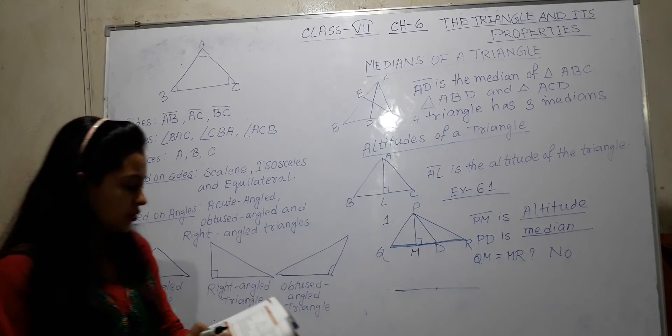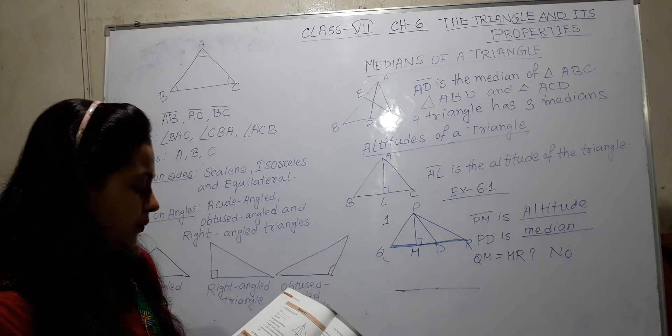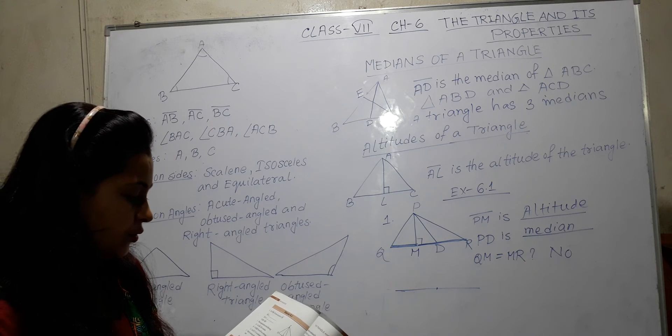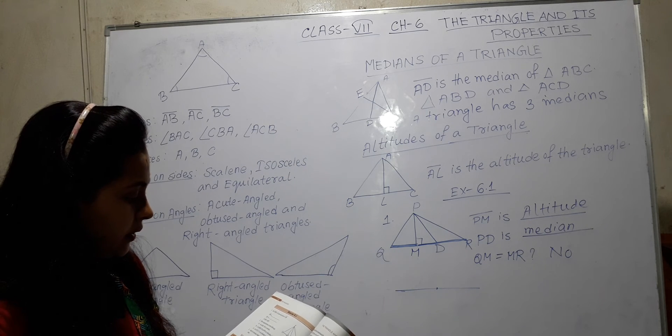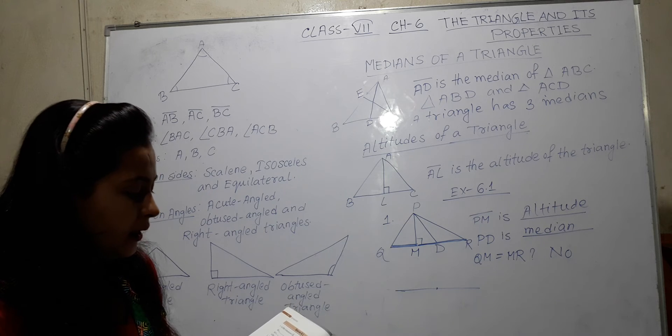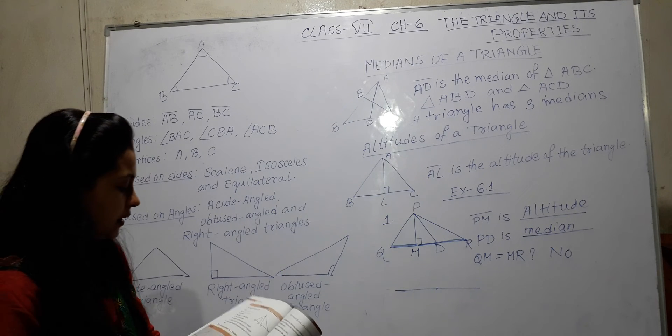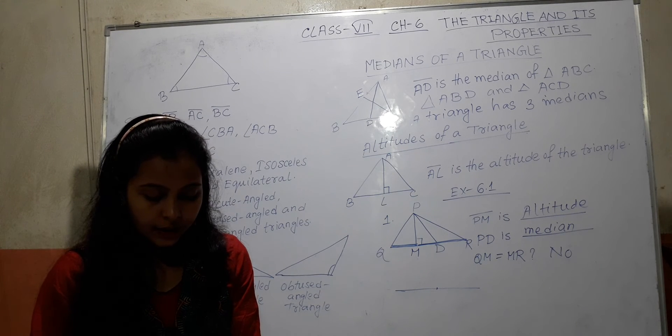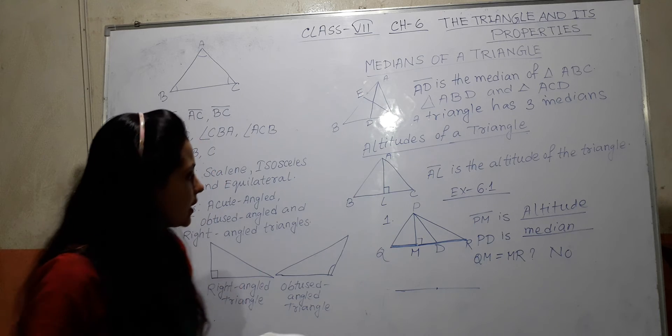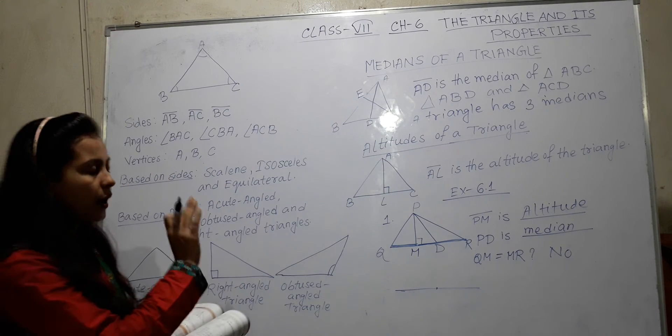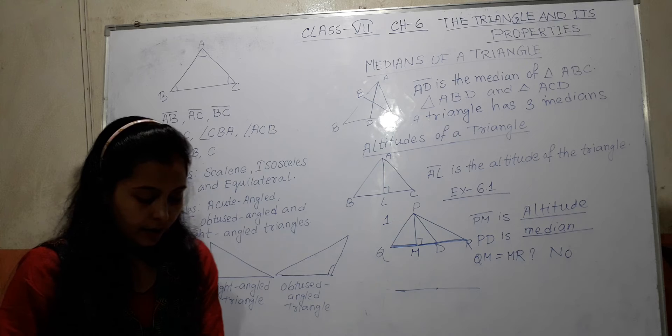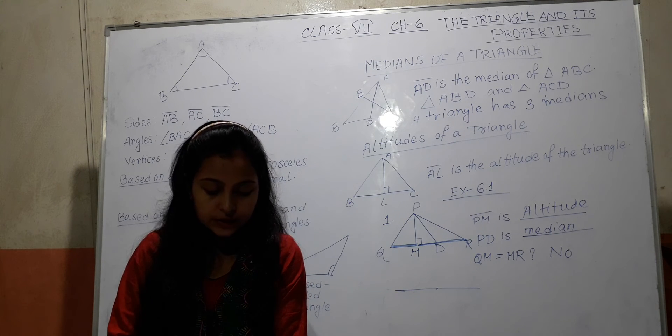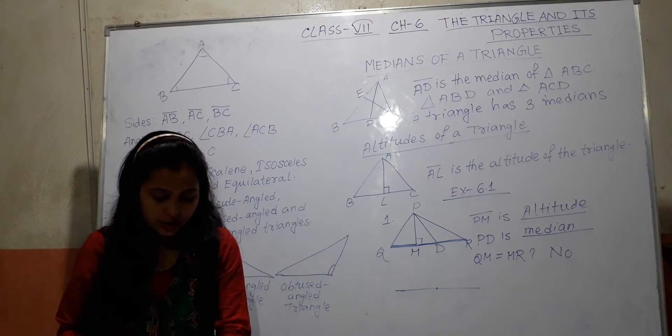Next question is draw a figure. PQ and PR altitude. YL is altitude in the exterior of the triangle. Exterior means which is outside. So first you try. If you cannot do it, then question number 2's answer I will send you later.